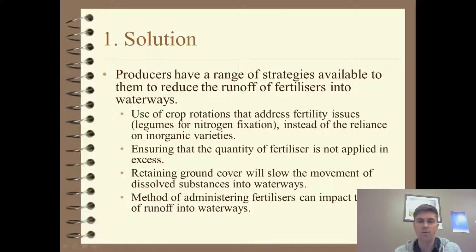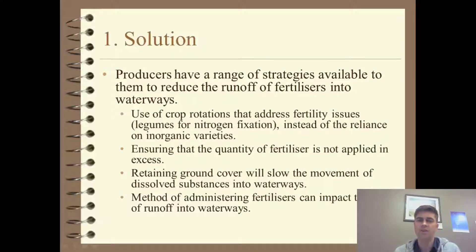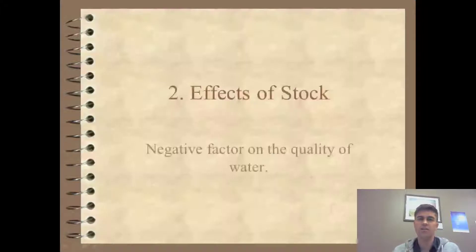A solution is to use crop rotation and use legumes to fix nitrogen. It's natural, not synthetic fertilizer, and it's going to reduce the amount of runoff into waterways as well.